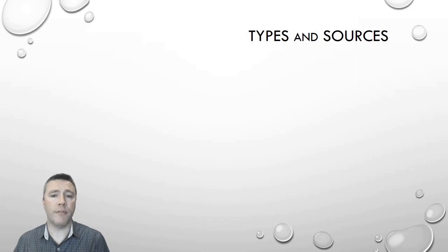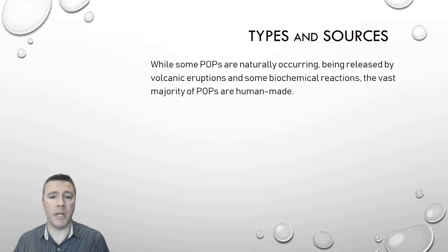There are a number of different types of persistent organic pollutants, and some of them are, in fact, naturally occurring. They can be released by volcanic eruptions, and even the result of some organisms' natural biochemical processes, but the vast majority of them are, in fact, human-made.